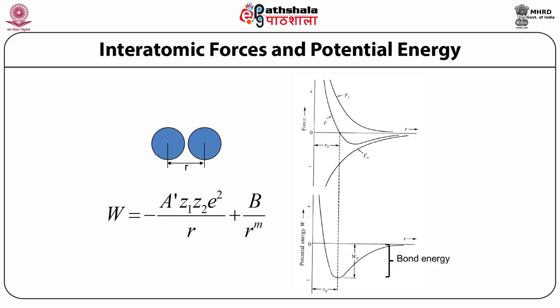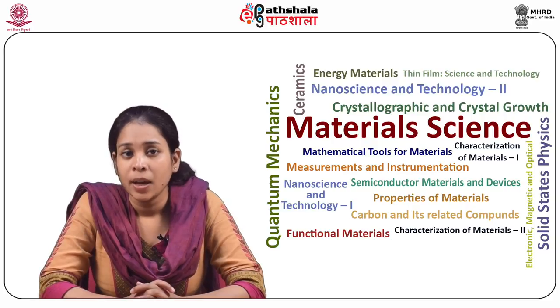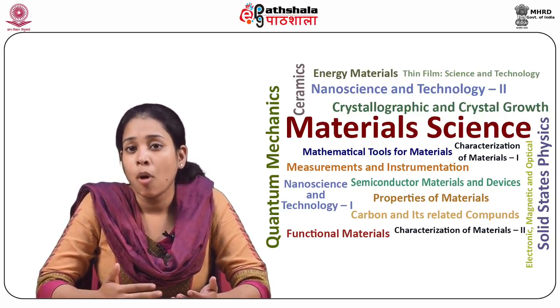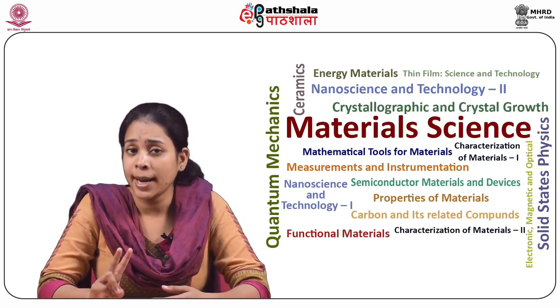The energy corresponding to the equilibrium separation is called bond energy W0, typically expressed in kJ per mole or eV per bond. In general, higher the bond energy, higher would be the melting point, elastic modulus, hardness and lesser is the coefficient of thermal expansion. According to the magnitude of bond energy, bonding in materials is divided into two categories: primary bonding and secondary bonding. Primary bonds exhibit bond energies in the range of 52–1000 kJ per mole.